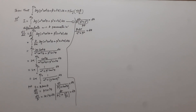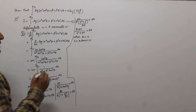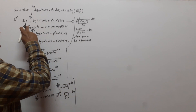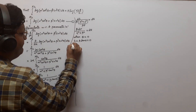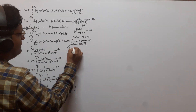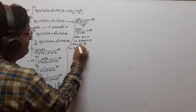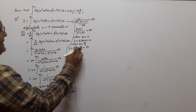We change the limits according to t. When θ = 0 (lower limit), t = β·tan0 = 0. When θ = π/2 (upper limit), t = β·tan(π/2) = β·∞ = ∞. So the corresponding limits in t are 0 to ∞.